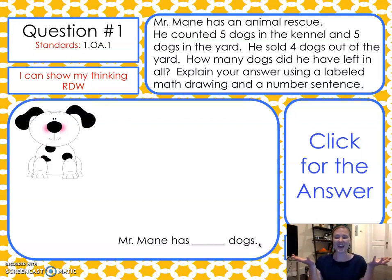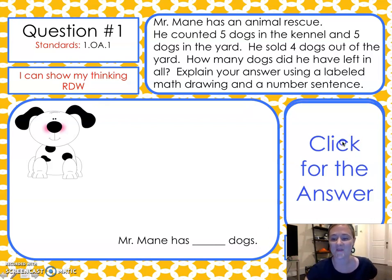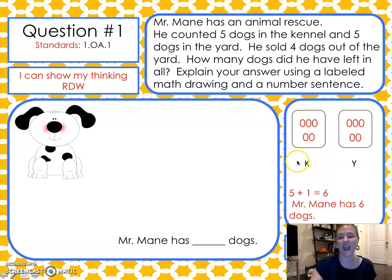All right, you're all done? Let me show you the answer. Five in the kennel and five in the yard. If I cross out four from the yard, I'll have one left. Five from the kennel and the one left over from the yard equals six. Mr. Maine has six dogs.